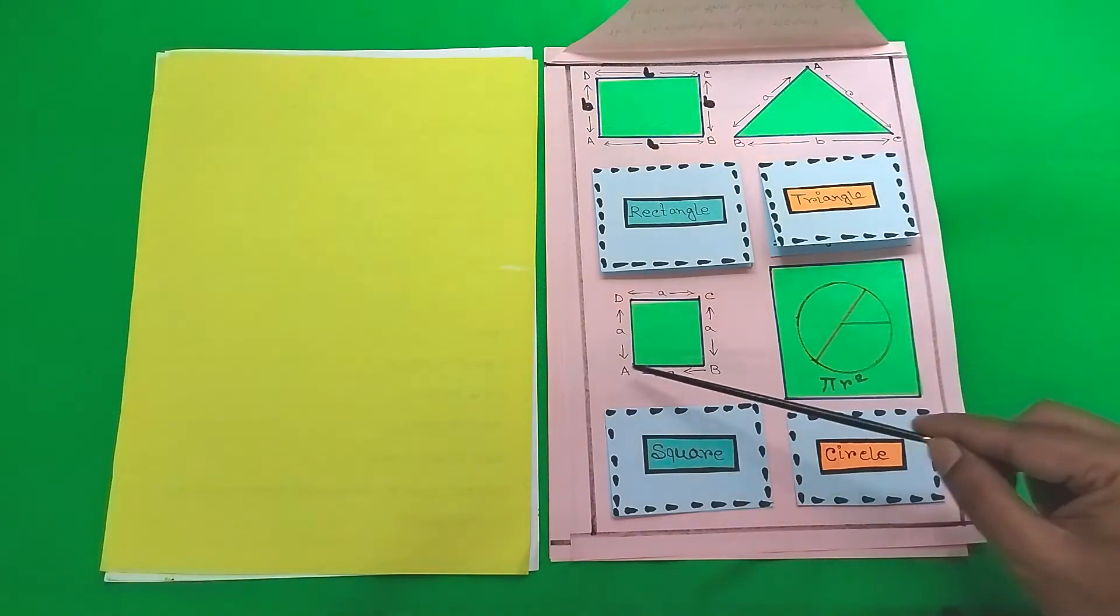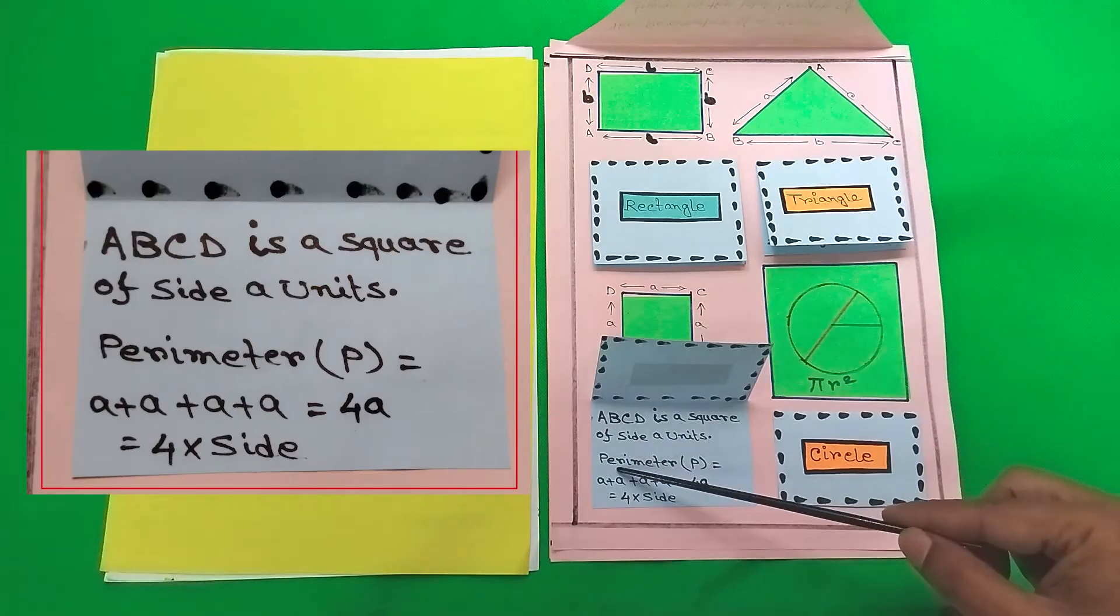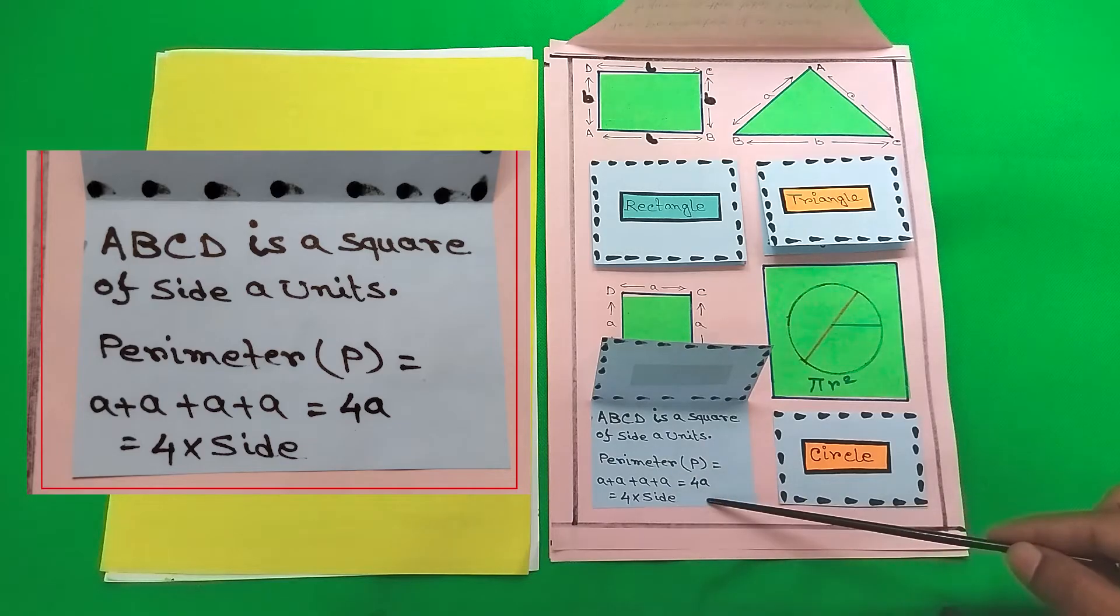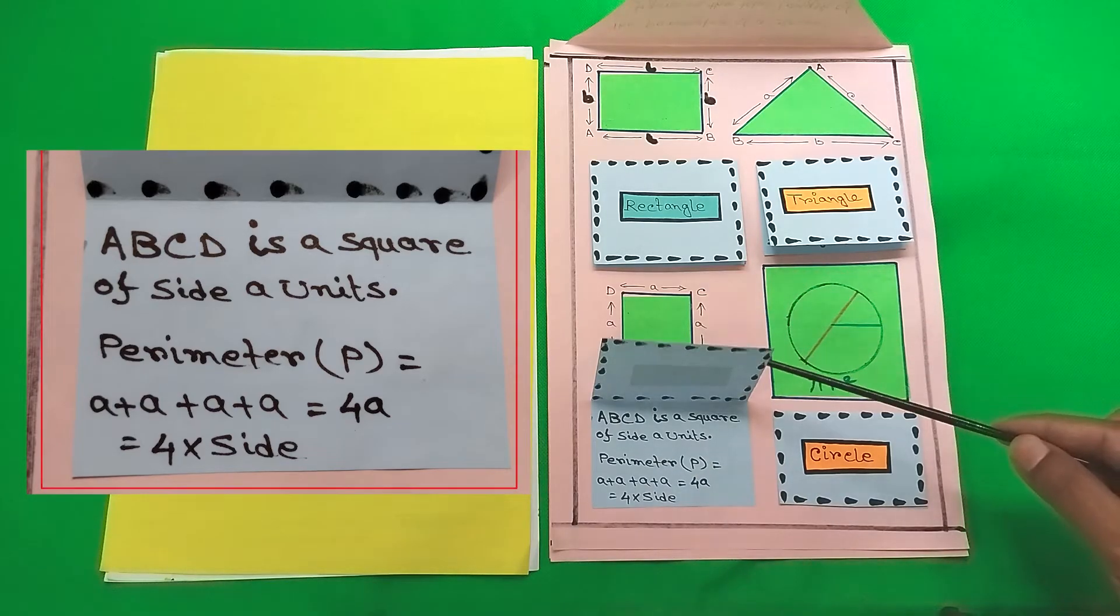So next we have the perimeter of a square. ABCD is a square of side A units. Perimeter P equals A plus A plus A plus A equals 4 times side.